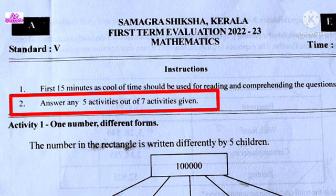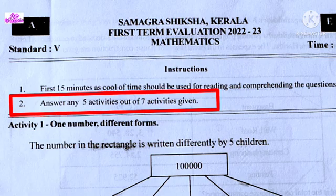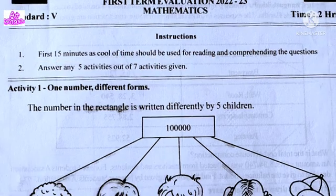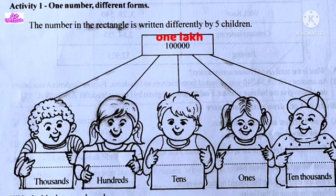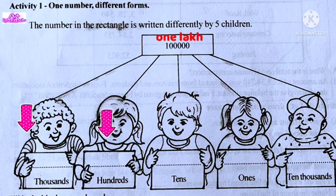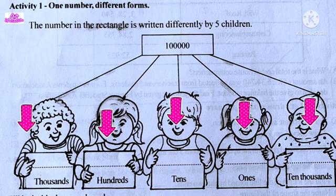Activity 1: One Number Different Forms. The number given is 1,000,000. We have to represent this number in different forms.